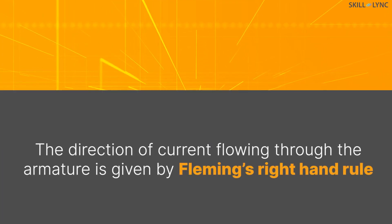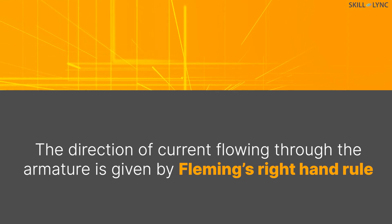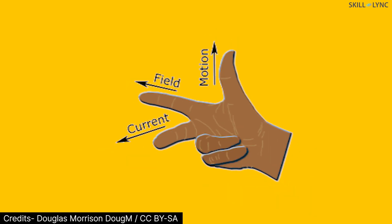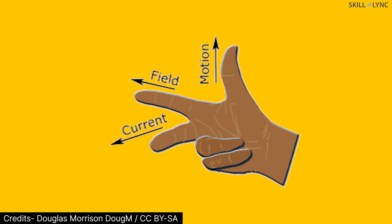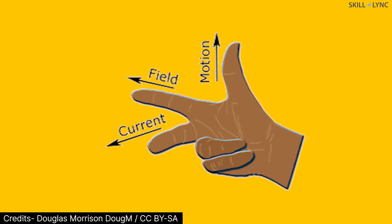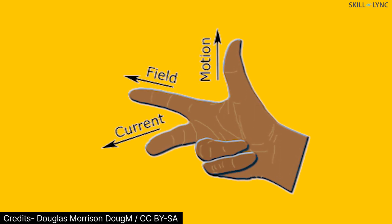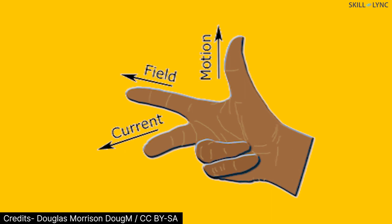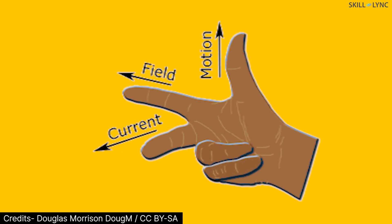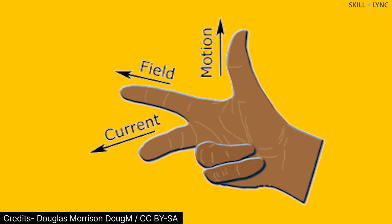The direction of the current flowing through the armature is given by Fleming's right-hand rule. According to this rule, if we stretch the thumb, index and middle finger of our right hand, then the thumb gives the direction of the force or motion, the index finger gives the direction of the magnetic field, and the middle finger gives the direction of the current.